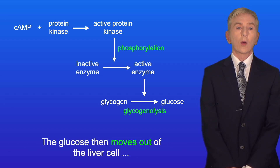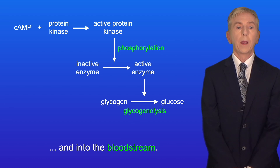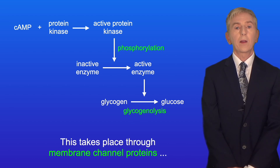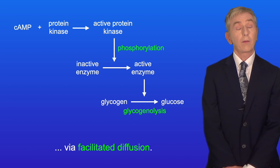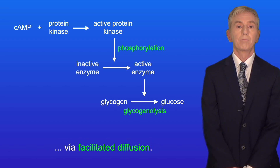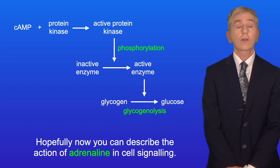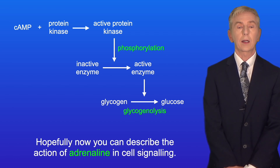The glucose then moves out of the liver cell and into the bloodstream. This takes place through membrane channel proteins via facilitated diffusion. Hopefully now you can describe the action of adrenaline in cell signaling.